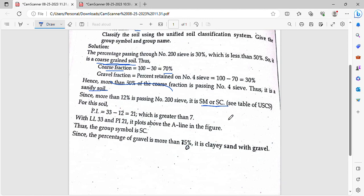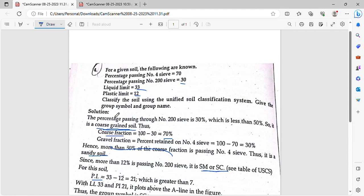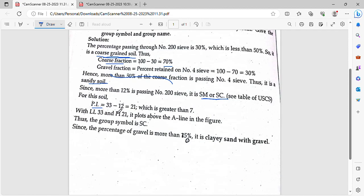We need to find the plasticity index. The plasticity index formula is liquid limit minus plastic limit. Liquid limit is 33 and plastic limit is 26. Liquid limit minus plastic limit equals 33 minus 26, which equals 7.